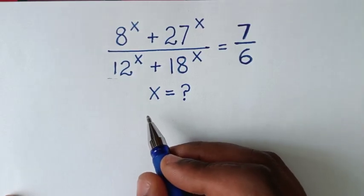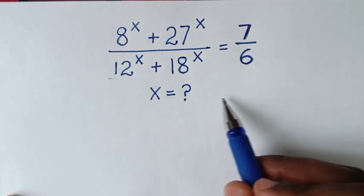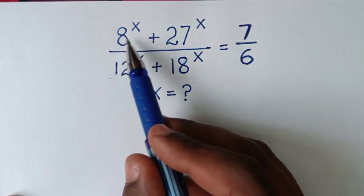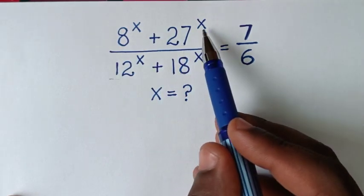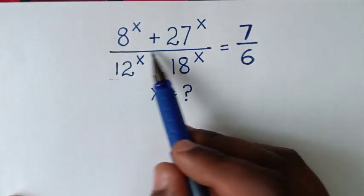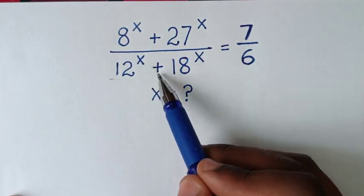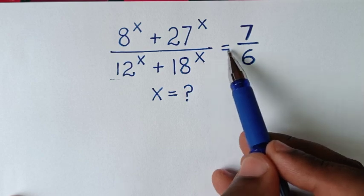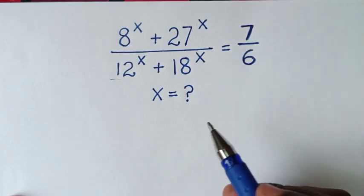Hello, you are welcome to solve this math problem, which is: (8^x + 27^x) / (12^x + 18^x) = 7/6. To find the values of x from this equation.